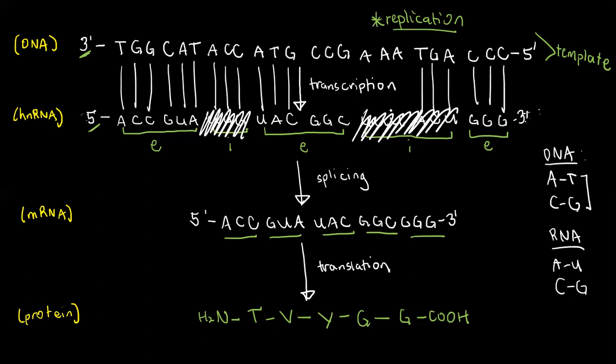And then the remaining exons, I will just write straight up. So as you notice, we now have the only exons in our final mRNA sample: ACC, GUA, UAC, GGC, GGG.